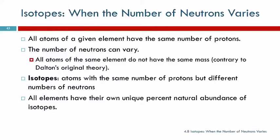Isotopes. Okay, so the number of protons is always the same for any atom of a given element. Always, always, always. It turns out the number of neutrons can vary a little bit. Okay, so the number of neutrons can vary. And so this is contrary to Dalton's original theory where he said that all atoms of an element are identical. They have the same mass. We now know that that's not true.